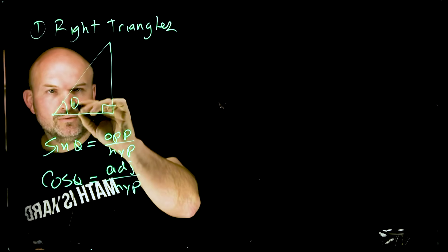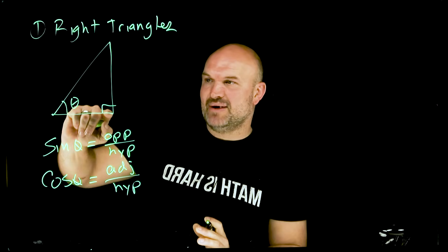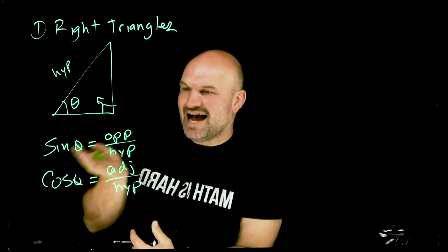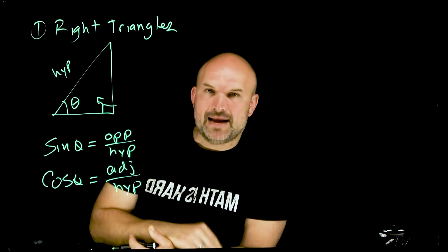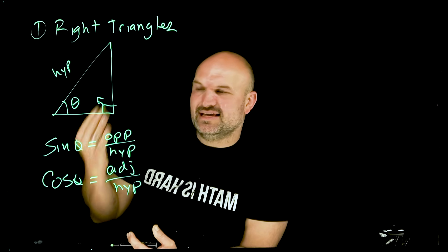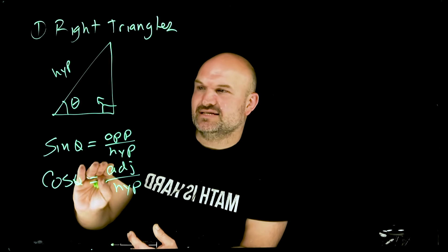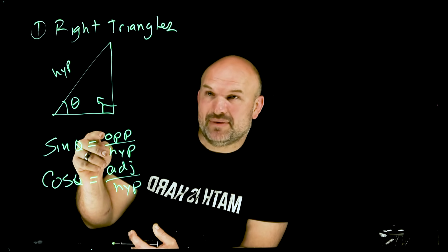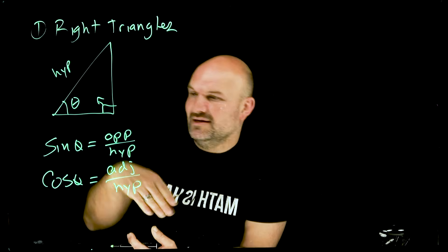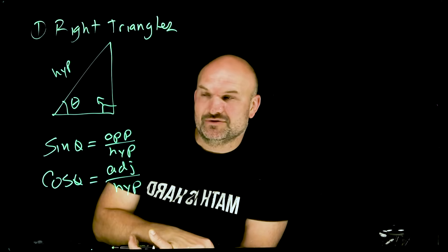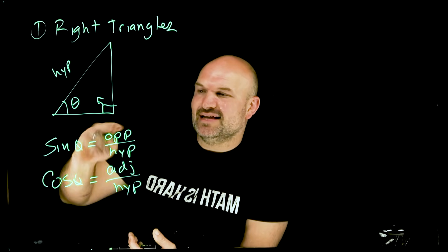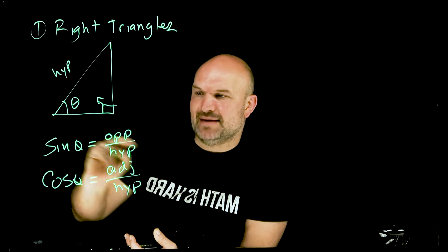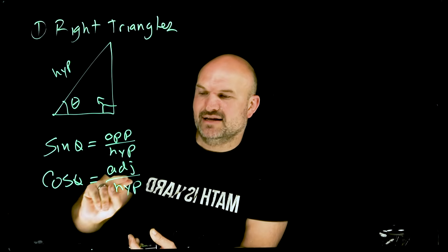I'm going to put theta right here. For a right triangle, your hypotenuse is always directly across from your 90-degree angle. The sine of your angle represents the opposite over the hypotenuse — how big, with respect to this angle, is the opposite side compared to the hypotenuse? If the opposite were the same as the hypotenuse, we'd have a value of 1, which wouldn't make sense for a triangle. So this ratio is somewhere between 0 and 1. Cosine is how big the adjacent side is compared to the hypotenuse.